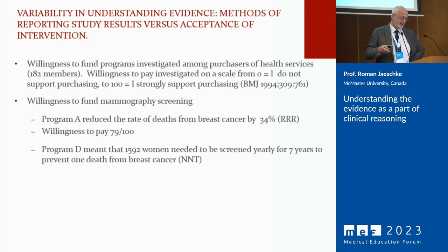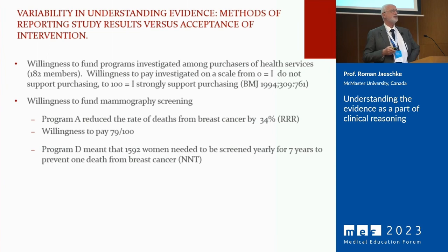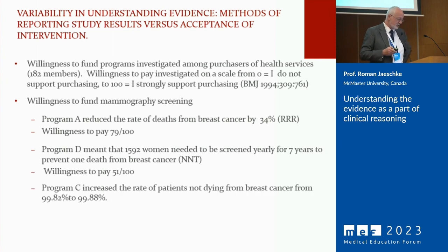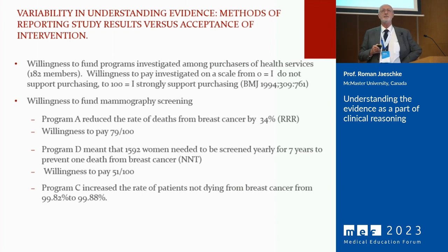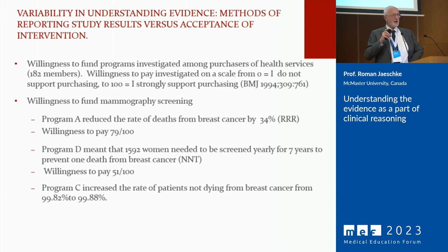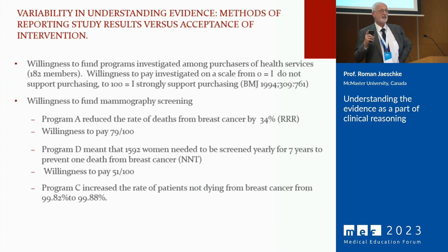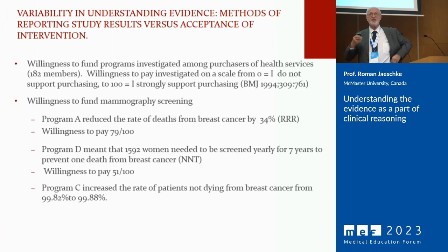Program C increased the rate of patients not dying from breast cancer from 99.82% to 99.88%. Some of you are noticing that these are the same programs. Depending on how you want to influence the decision, you present it in a different way. If you are not sufficiently skillful in this sort of mathematics, you're lost. They will tell you to start screening at 40 — mammographers will say everyone should have mammography. They know best, no?